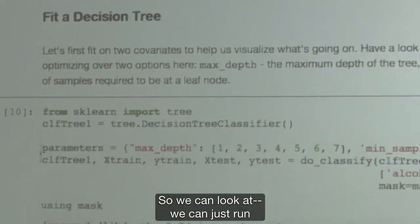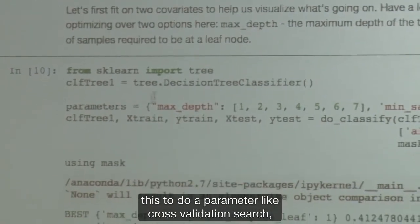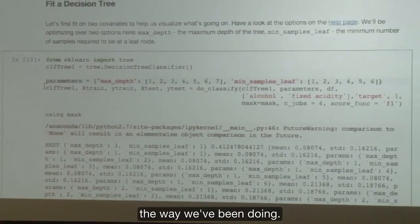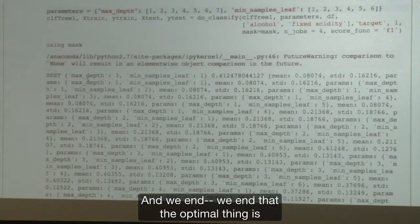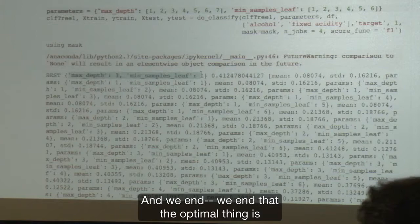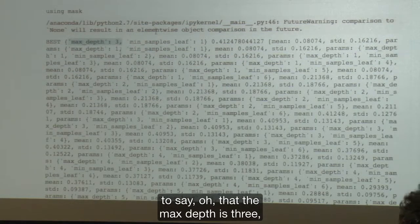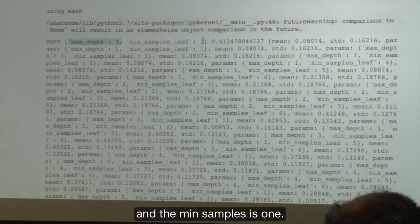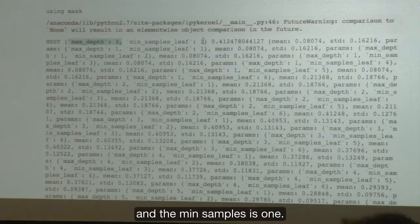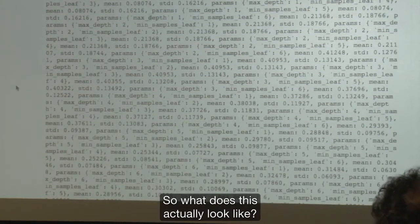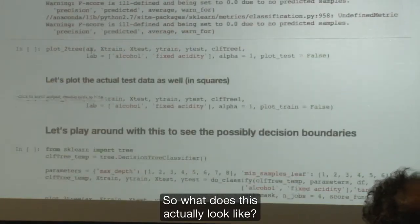So we can look at, we can just run this to do a parameter cross-validation search the way we've been doing. And we find that the optimal thing is to say that the max depth is three and the min samples is one.